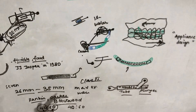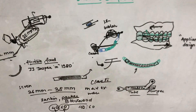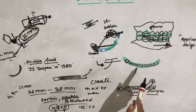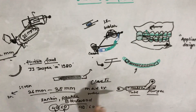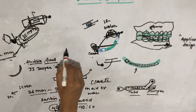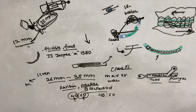The dental effects include: posterior tipping and intrusion of the upper molars, backward tipping of the maxillary incisors, anterior translation and tipping of the mandibular teeth (mesial direction), and intrusion of the mandibular incisors.